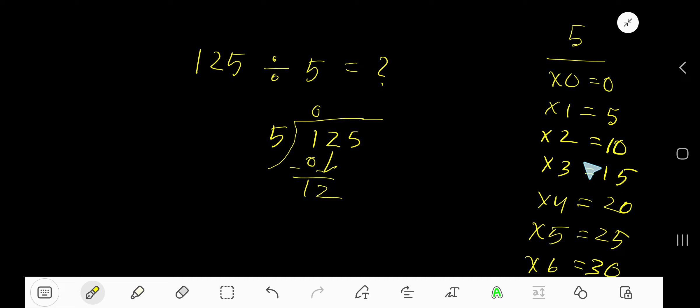5 goes into 12 how many times? 3 times gives 15 which is greater, so 2 times. 2 times 5 is 10, subtract 2.